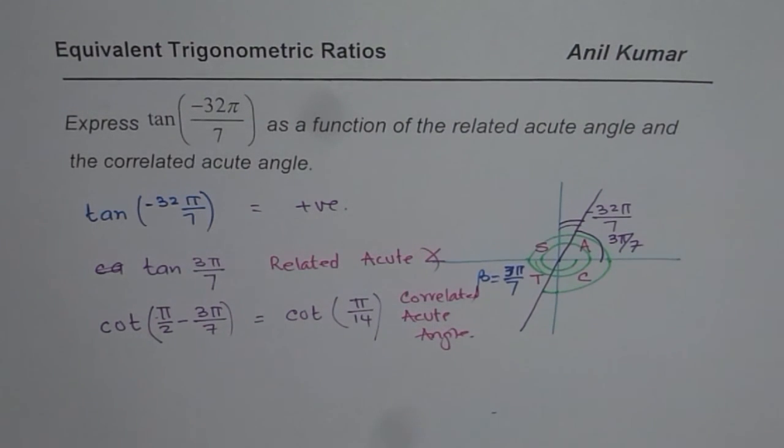I hope that helps you to understand how we can write any trigonometric ratio as an equivalent ratio in terms of related acute angle or co-related acute angle. I hope that helps. Thank you.